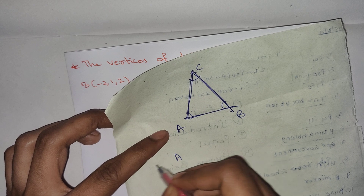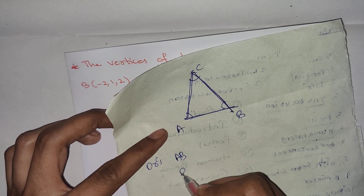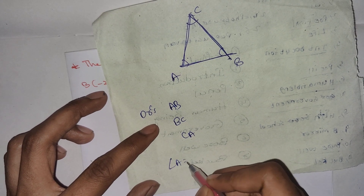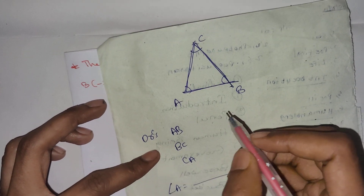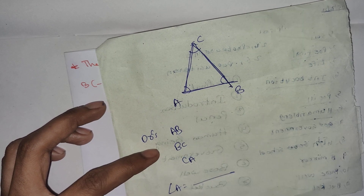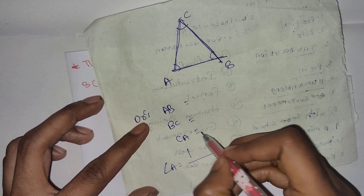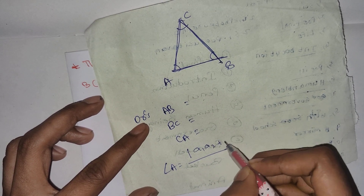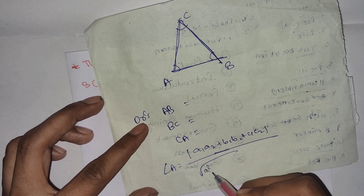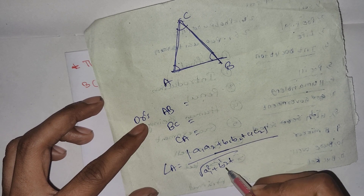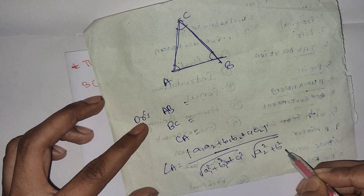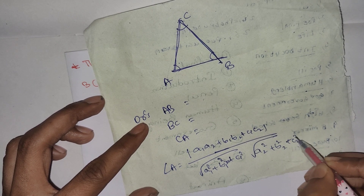First, the direction ratios of AB, BC, and CA. We need to find DRs of AB and AC. The formula is: A1, A2 plus B1, B2 plus C1, C2 divided by the square root of A1 squared plus B1 squared plus C1 squared, into A2 squared plus B2 squared plus C2 squared. This is the formula.